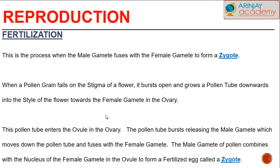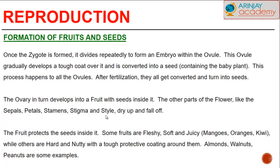This pollen tube enters the ovule in the ovary. The pollen tube bursts, releasing the male gamete, which moves down the pollen tube and fuses with the female gamete. The male gamete of pollen combines with the nucleus of the female gamete in the ovule to form a fertilized egg called a zygote.